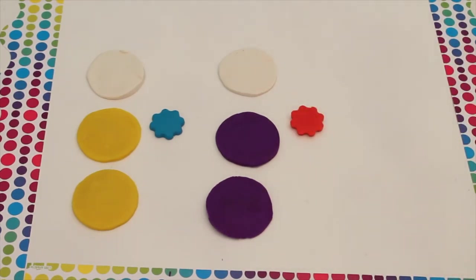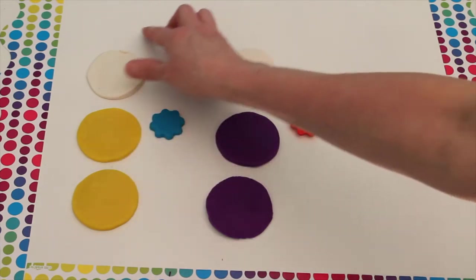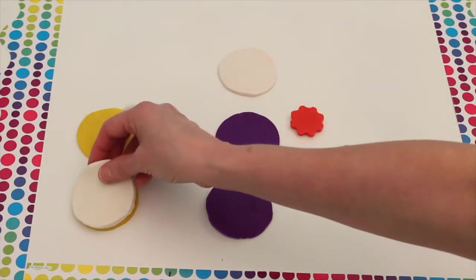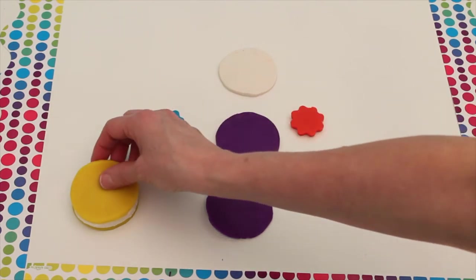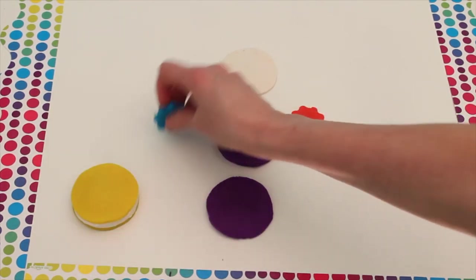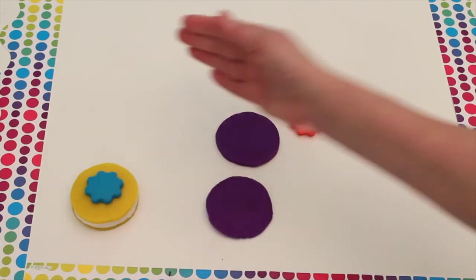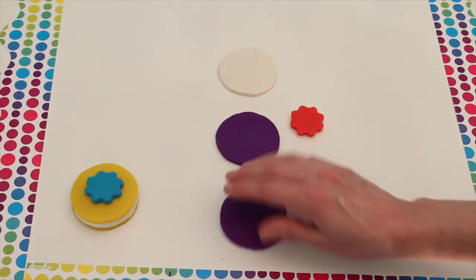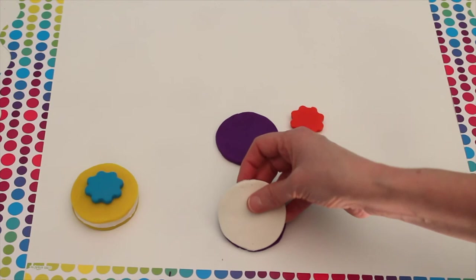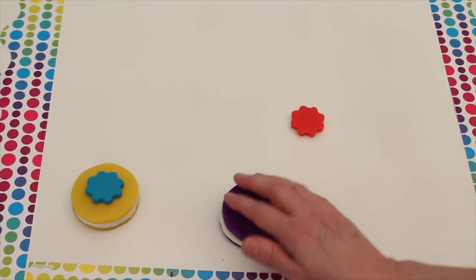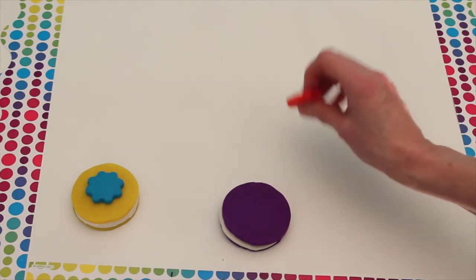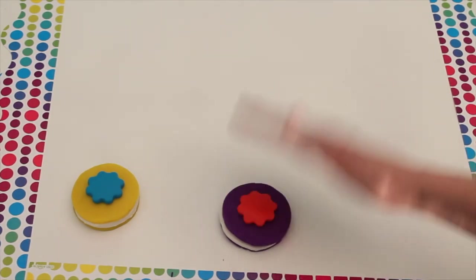So now let's put our cookies together. Let's take this white and put it on top of the yellow. And put the yellow on top of the white. And put our blue flower on top. We'll take our purple and put white on top of the purple. And purple on top of the white. And the red flower on top of the purple.